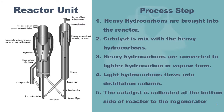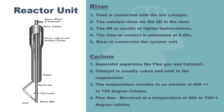In this system, the hydrocarbons are first brought into the reactor. The catalyst is mixed with the hydrocarbons in the reactor. Heavy hydrocarbons are then converted to lighter hydrocarbons in the form of vapour. This vapour will move up the reactor and into the distillation column. While the catalyst is collected at the bottom of the reactor, it will move into the regenerator via a tilted valve. There are mainly two important units in a reactor: the riser and the cyclone.